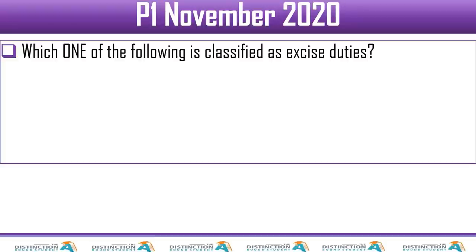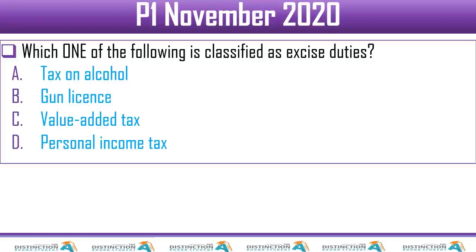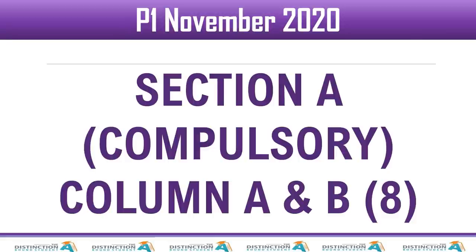Question 8 asks which is classified as excise duty. Look for a demerit good — mostly alcohol or cigarettes. A gun license is not quite a demerit good. Value added tax and personal income tax are not excise duties. The answer is tax on alcohol. This concludes the multiple choice section — if you wrote down your answers you'll see we have exactly two A's, two B's, and two D's.